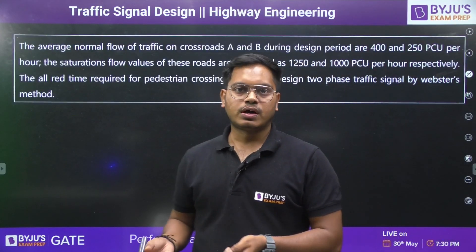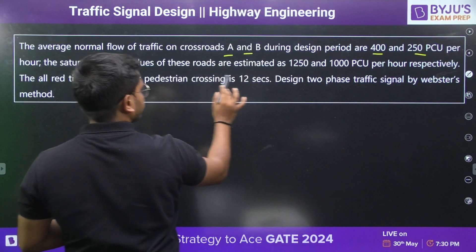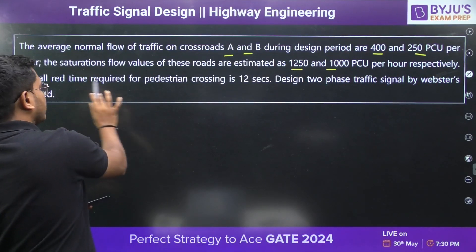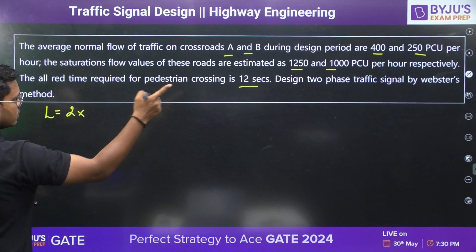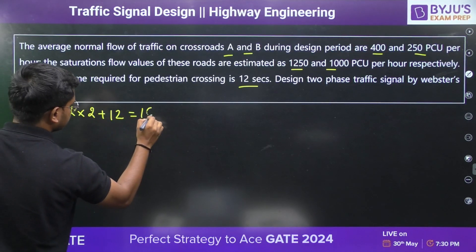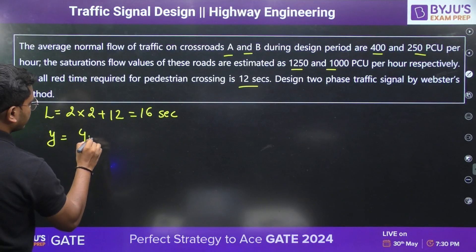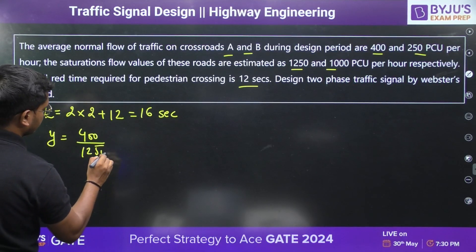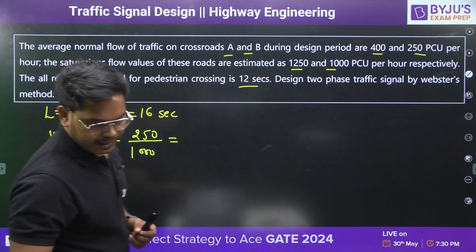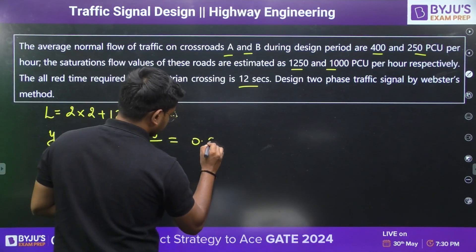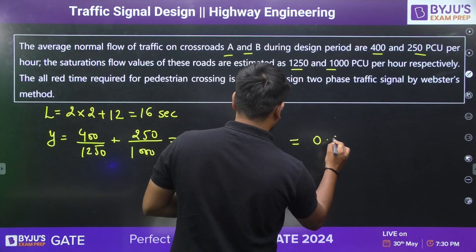Here is a sample question on how questions are cast from this topic. The average normal flow of crossroad A and B during the design period and their saturation flows are given. All red time is 12 seconds. Design a two-phase traffic signal. Total loss L = 2 × 2 + 12 = 16 seconds. Y value: Yₐ = Nₐ / Sₐ = 0.32, Y_B = N_B / S_B = 0.25, so Y = 0.57.